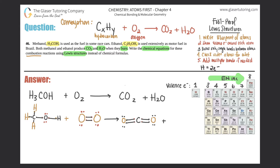For H2O: hydrogen can never be in the middle, so oxygen is in the middle surrounded by two hydrogens. Each hydrogen has one valence electron; oxygen has six. After making single bonds, each hydrogen has two electrons and the oxygen has eight electrons — everyone is happy. The Lewis structure for water is complete.